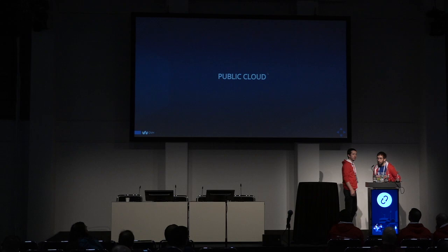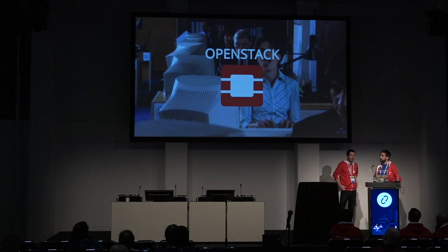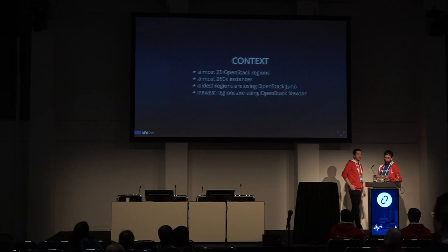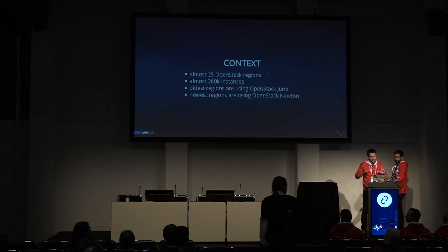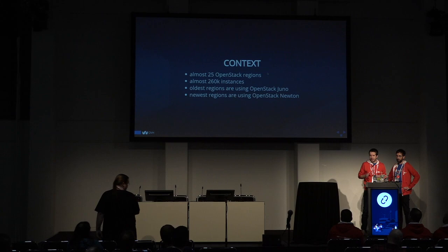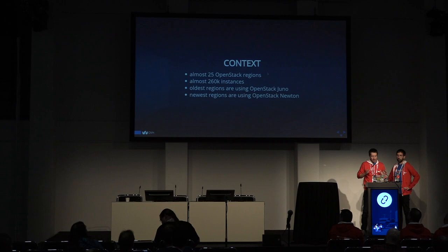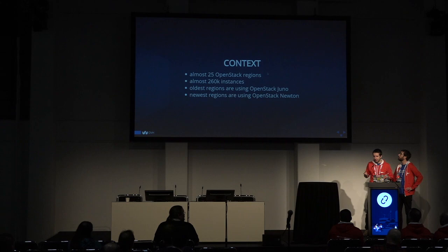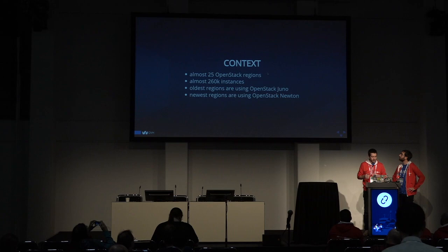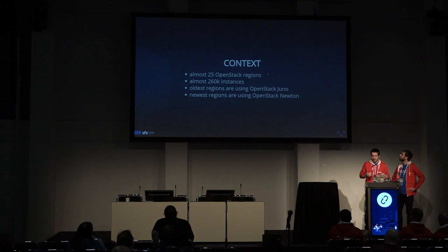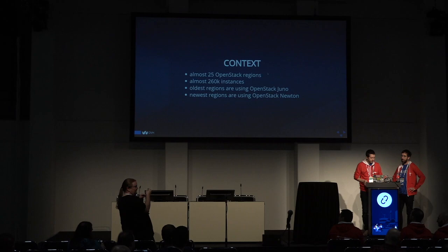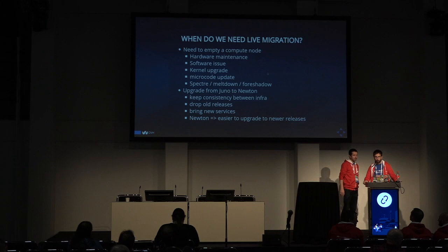We are providing volumes with Ceph backends, and of course we provide OpenStack. Before starting, just a little bit of context so everybody is aware of what we're doing: we are managing 25 OpenStack regions based on OpenStack Juno or OpenStack Newton. We will talk a bit later about how we upgraded from Juno to Newton, and we have more than 250,000 instances deployed across all these regions worldwide.